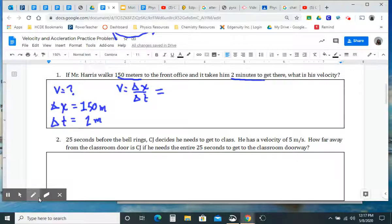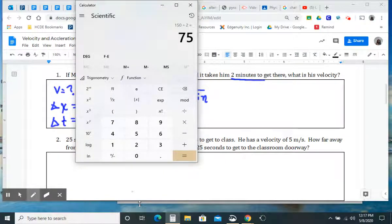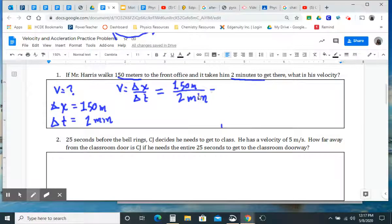Delta X, we know, we just wrote was 150 meters. So I'm just going to copy that right here. 150 meters divided by two - oh, you know what? Let's be careful here. Those are not meters, those are minutes. Divided by two minutes. So what is his velocity? Well, I'm just going to punch that into my calculator. And I will end up with 150 divided by two. That's just 75. So we'll come over here and we will say that equals 75.